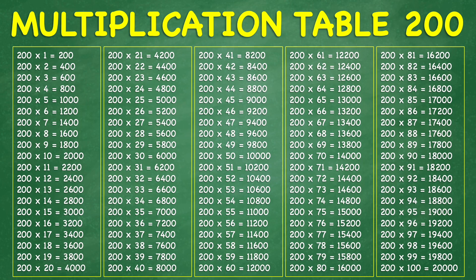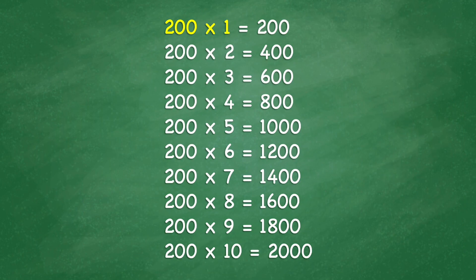Multiplication table of 200. 200 times 1 equals 200. 200 times 2 equals 400. 200 times 3 equals 600. 200 times 4 equals 800. 200 times 5 equals 1,000. 200 times 6 equals 1,200. 200 times 7 equals 1,400.